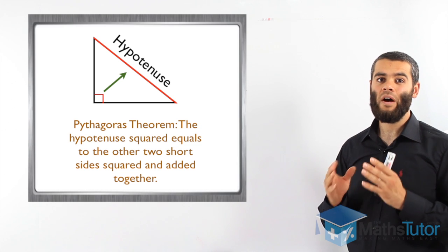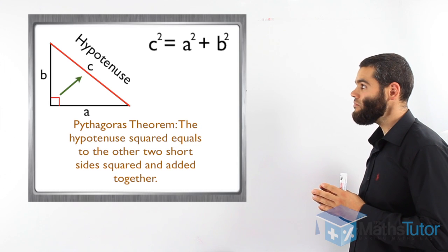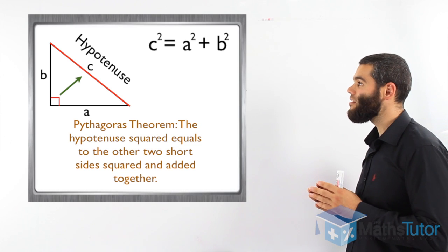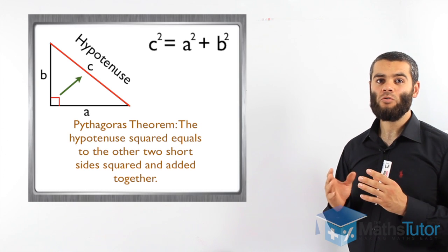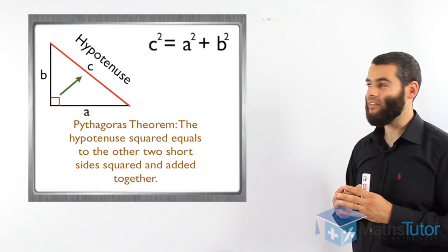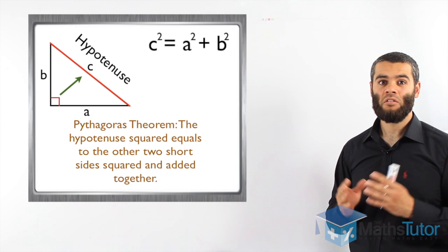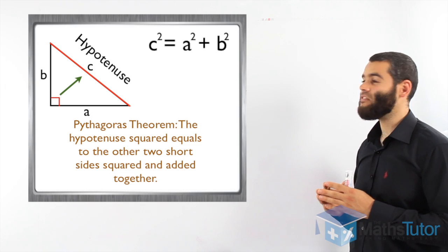So in maths, we write it in a formula like this. He found out that the hypotenuse squared, here we marked it as C, so C squared, equals the other two short sides squared added together. We marked the other two short sides with A and B, so the formula is C squared equals A squared plus B squared.